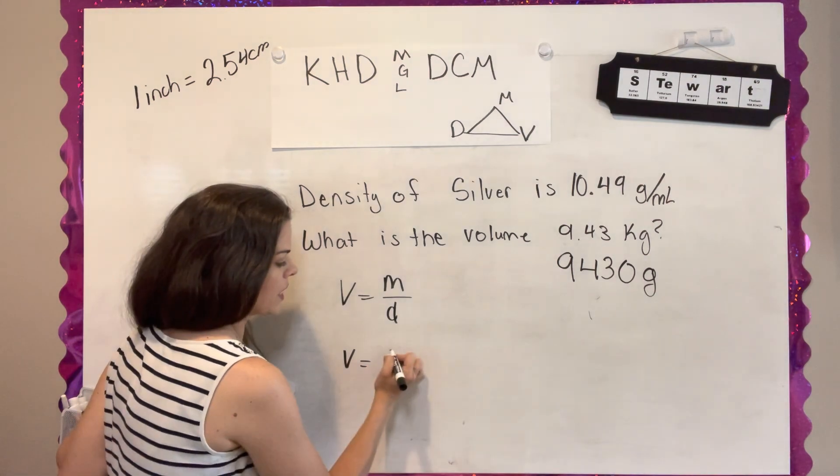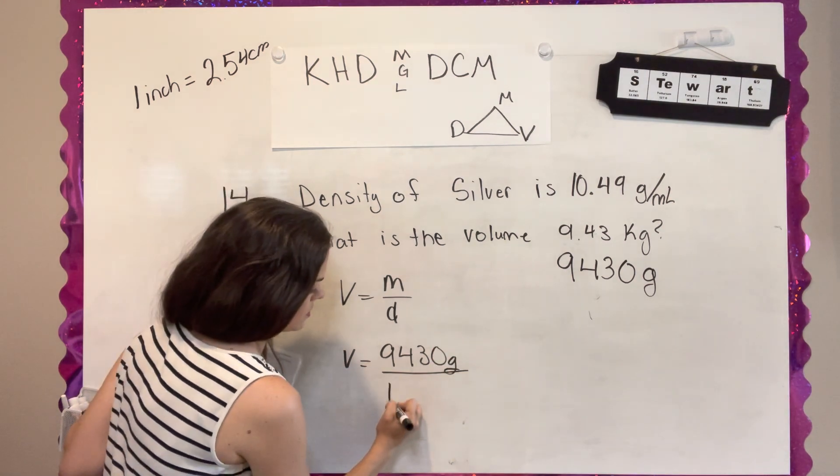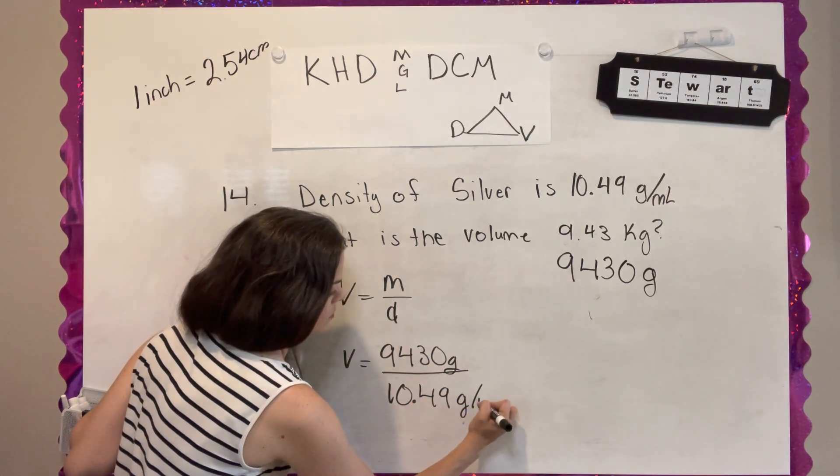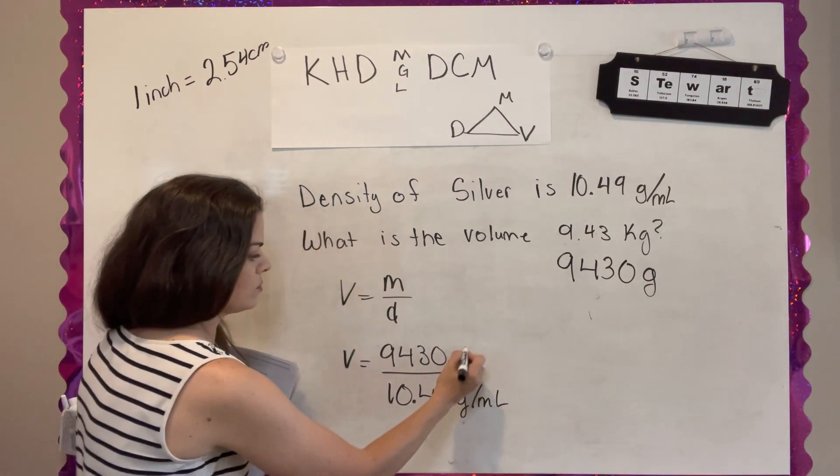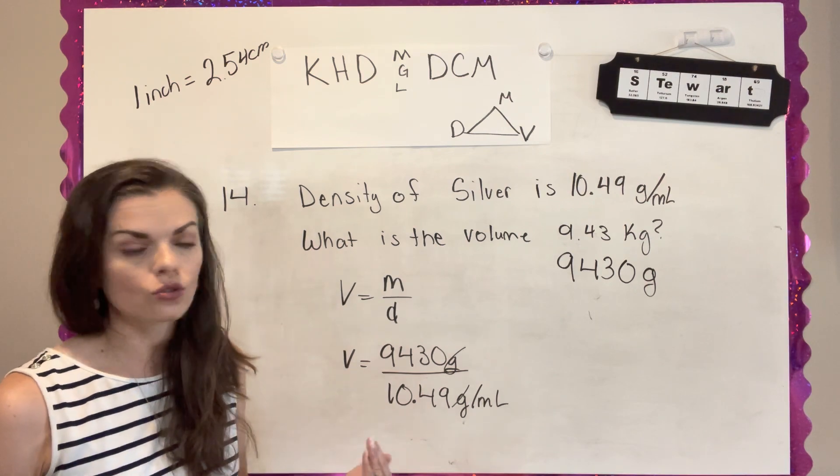Now I'm looking for volume. So if I cover up volume, I have mass over density. And I know my mass is 9,430 grams. And I know my density. Grams will cancel out.